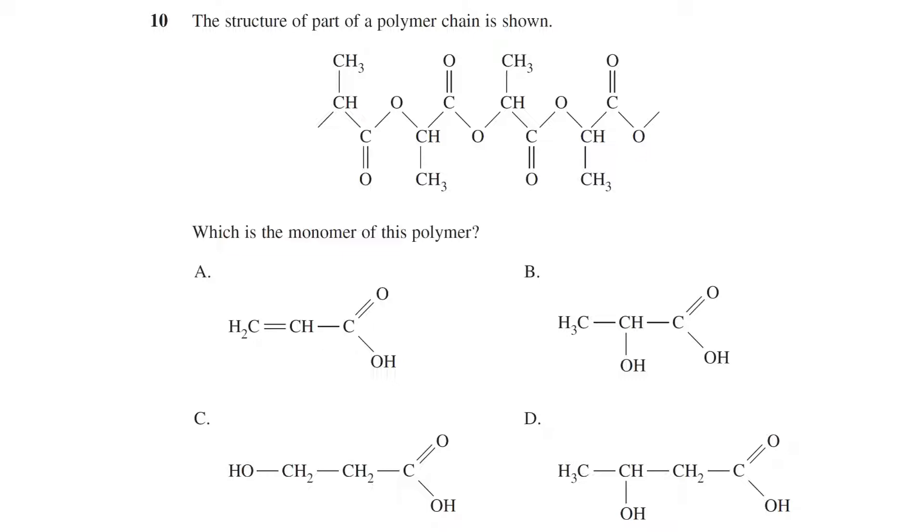In order to solve this question, we first identify the repeating pattern and then match this up to a monomer. The monomer has three carbons, with a double and single bonded oxygen of the first carbon, a single bonded oxygen of the second, and a methyl group of the third.